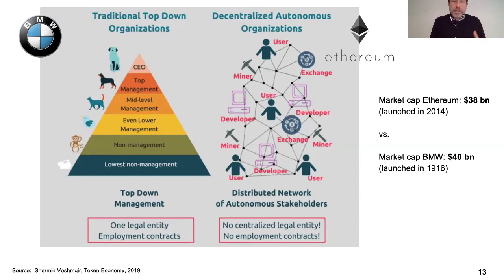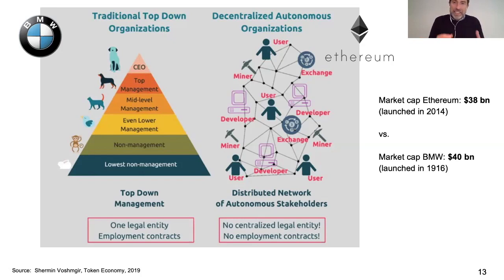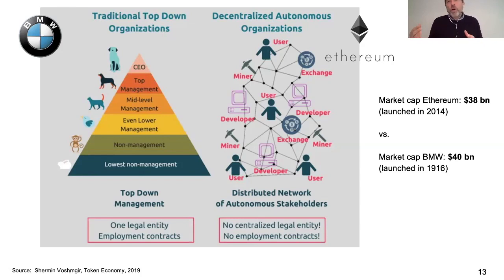The way these organizations are set up is very different. BMW is a typical top-down organization with a CEO at the top and workers assembling cars in factories — one legal entity organized by employment contracts. Ethereum, on the other hand, is a decentralized autonomous organization: no centralized legal entity, no employment contracts — just different stakeholders working together in a decentralized network. That's quite fascinating when thinking about how blockchain and tokens could change the way our society creates value.